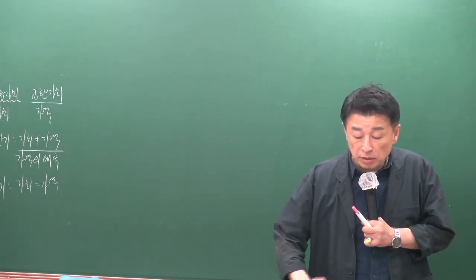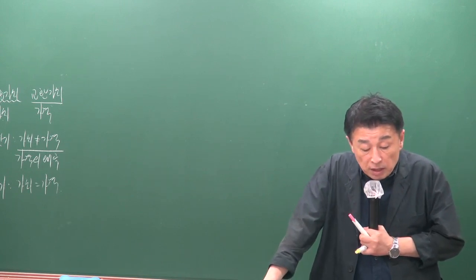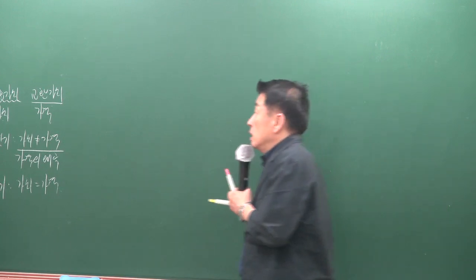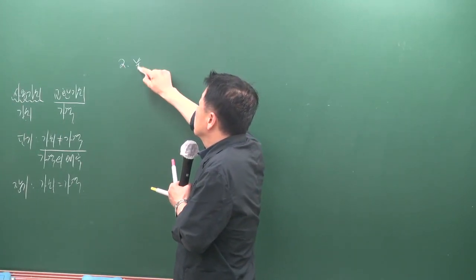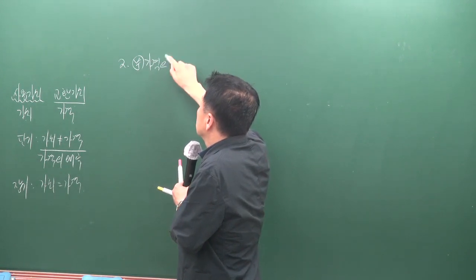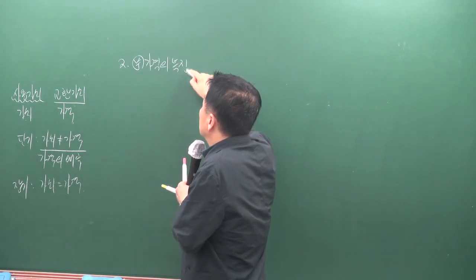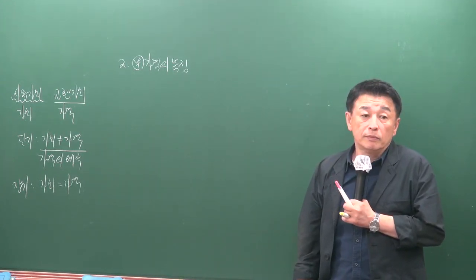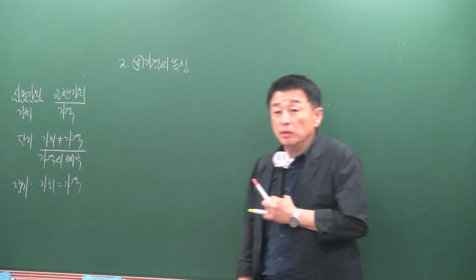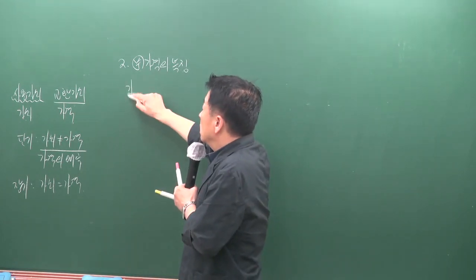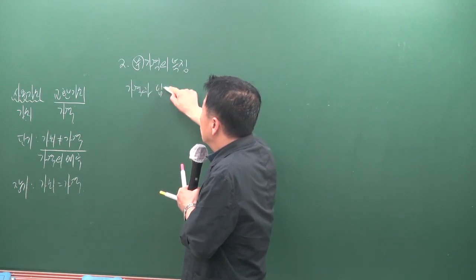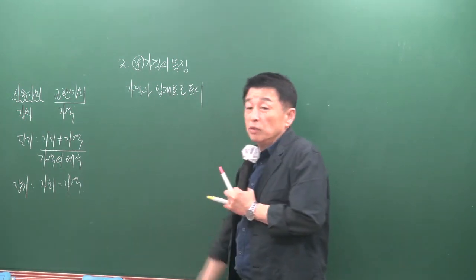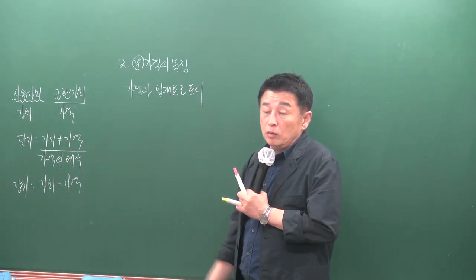부동산 가격의 특징으로는 먼저 가격과 임대료로 표시할 수 있다는 점이 있습니다. 이것이 가능한 이유는 부동산의 영속성 때문입니다. 영속성이란 아무리 사용하더라도 토지는 없어지지 않는다는 의미로, 이로 인해 임대료를 지속적으로 받을 수 있습니다.